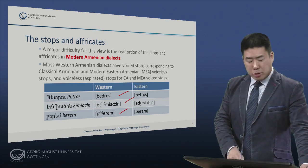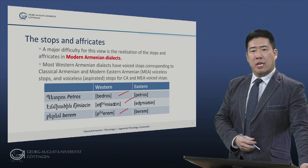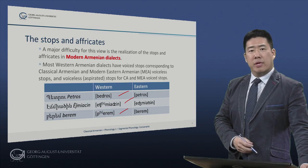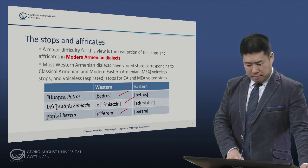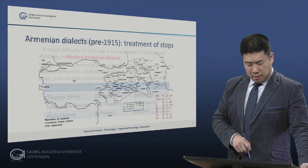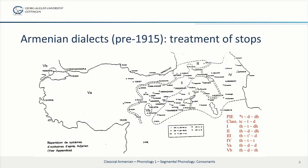The following map shows the distribution of these different realizations in the pre-1915 Armenian dialects. You see that in this map, adopted from the pioneering work of Hracha Adjaryan before the 1915 massacres, we have several different groups of dialects.